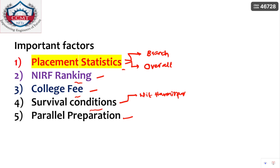Food and people are also part of survival conditions. If you go to another state, the people, culture, and food will all be different. Some people will adapt and mingle well, while others may face difficulties. So consider these aspects carefully when making your priority order.